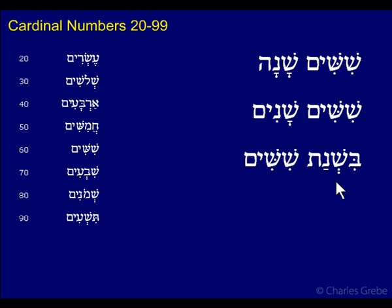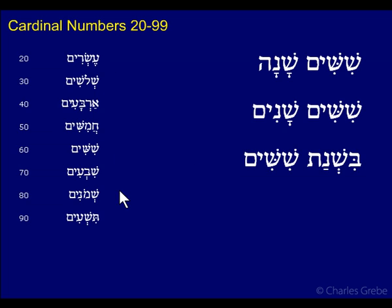Here we have Bishnat Shashim. Bishnat comes from Shana and is in the construct with the inseparable preposition B, meaning 'in the year.' So Bishnat Shashim means 'in the year of 60' or 'in the 60th year.' This shows that these tens can also function as ordinals — for example, 'in the 60th year of the reign of so-and-so.'